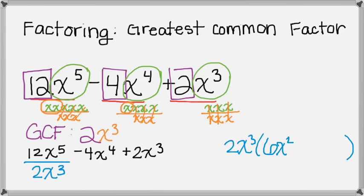And then I go to my other term, negative 4x to the 4th divided by 2x cubed. So negative 4 divided by 2 is negative 2. x to the 4th divided by x cubed is x.